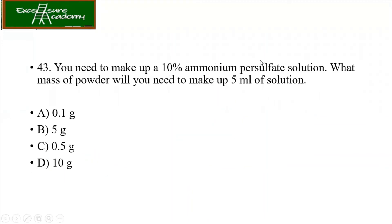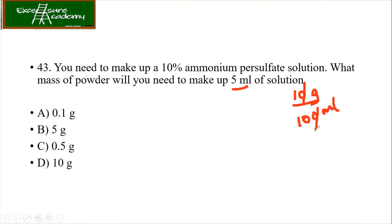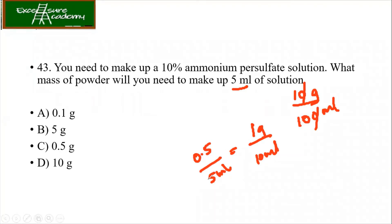You need to make up 10% ammonium persulfate solution. What mass of powder will you need to make 5 ml of solution? We know that 10% means 10 grams in 100 ml. So for 5 ml: 10 grams in 100 ml becomes 1 gram in 10 ml, and then halved gives 0.5 grams in 5 ml. The answer is option C — 0.5 grams is required.